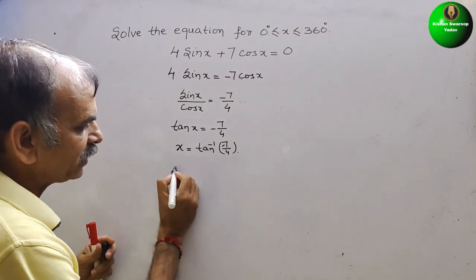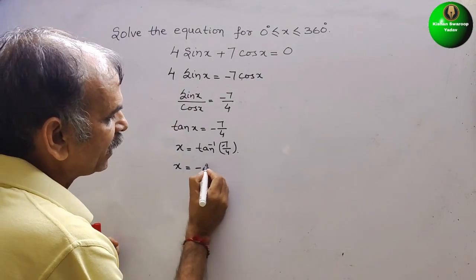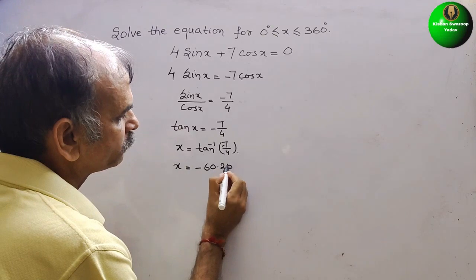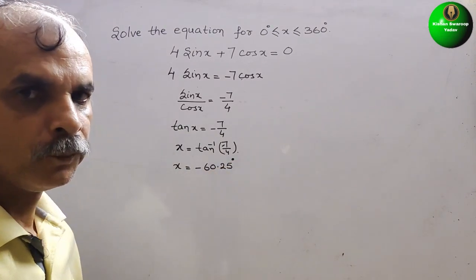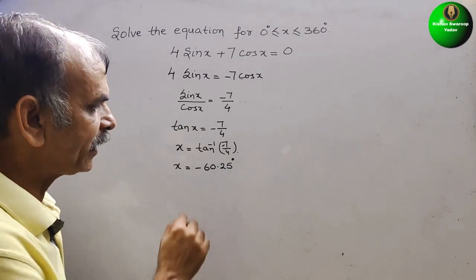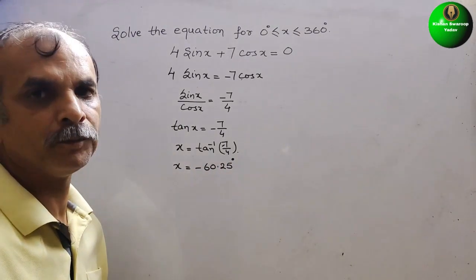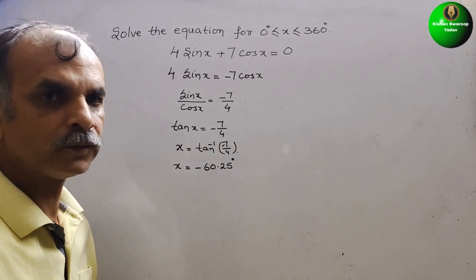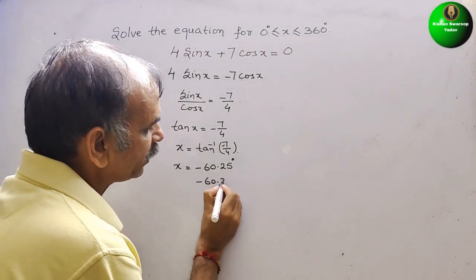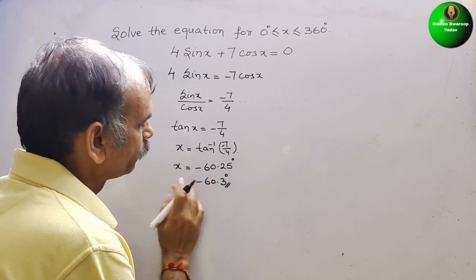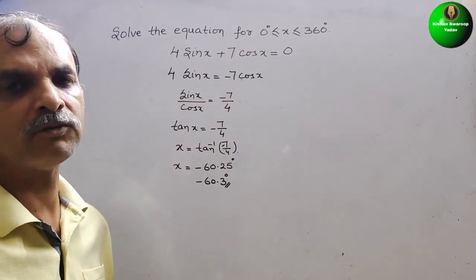So now x is minus 60.25 degrees. You can write it as minus 60.3. So we will take it as minus 60.3 degrees. Like this we have to do it.